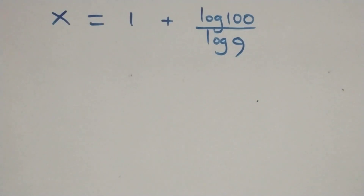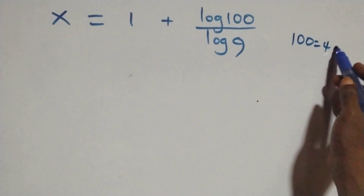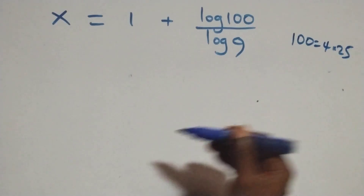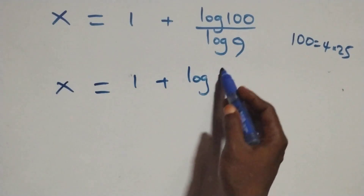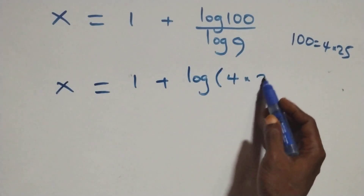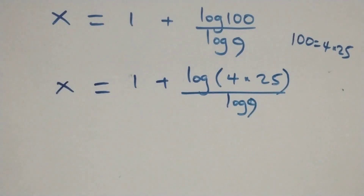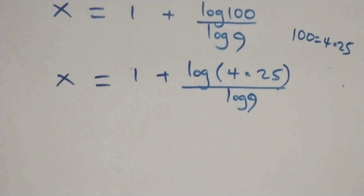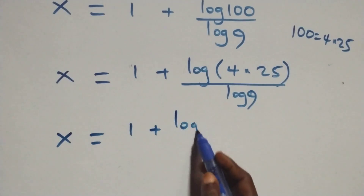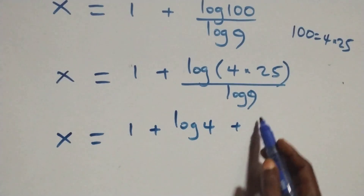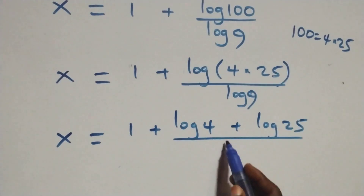Then here we can express 100 as 4 times 25. So what we have becomes x equals to 1 plus log(4 times 25) over log 9. This also follows the law of logarithms, and we have x equals to 1 plus (log 4 plus log 25) over log 9.